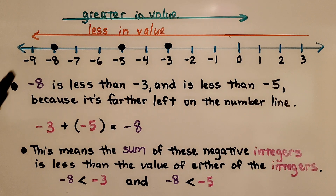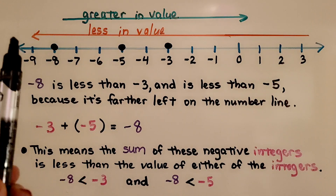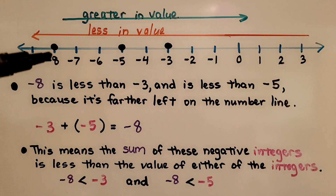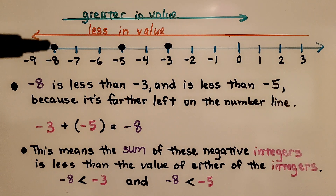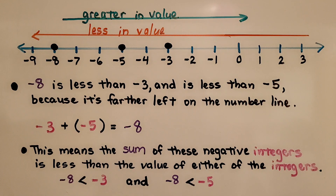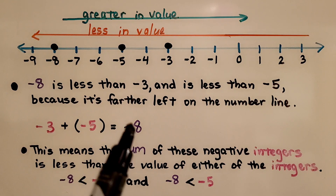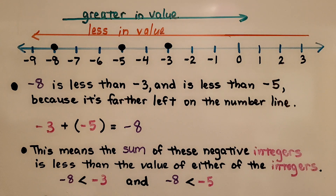On a number line, as we move to the right the numbers become greater in value, and as we move to the left the numbers become less in value. Negative 8 is less than negative 3, and negative 8 is less than negative 5, because it's farther to the left on the number line. So when we add negative 3 and negative 5 together, they equal negative 8, meaning the sum of these negative integers is less than the value of either of the integers.